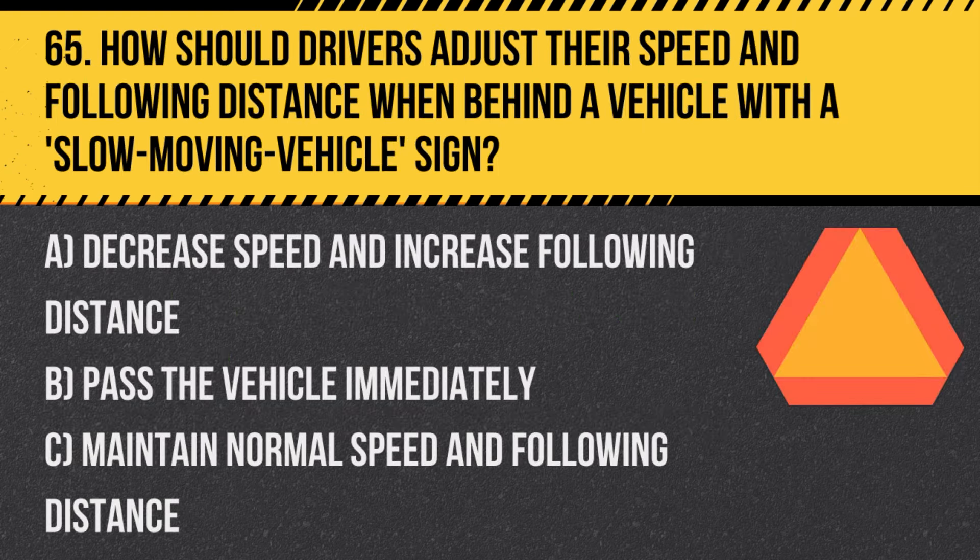Question 65: How should drivers adjust their speed and following distance when behind a vehicle with a slow-moving vehicle sign? A. Decrease speed and increase following distance. B. Pass the vehicle immediately. C. Maintain normal speed and following distance. Answer: A. Decrease speed and increase following distance. It's important to adjust to the slower pace for safety.